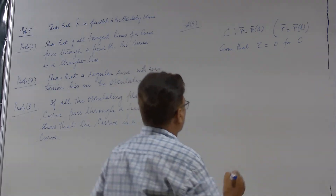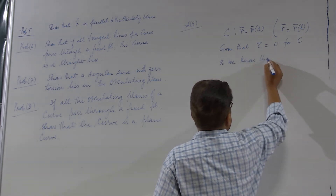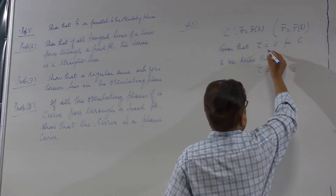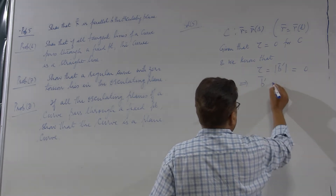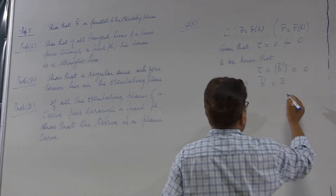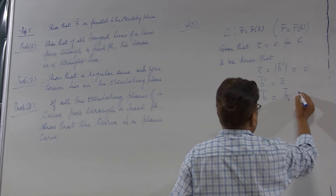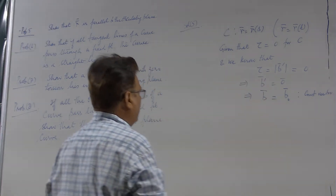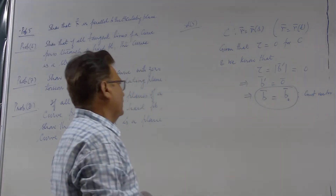τ = 0 means, and we know, that τ is in fact the modulus of b′. Since τ is zero, the modulus of b′ is zero, which implies that the vector b′ is the zero vector. And once b′ is the zero vector, this implies that the vector b is a constant vector. Let me call this constant vector b₀ — it is some constant unit vector.